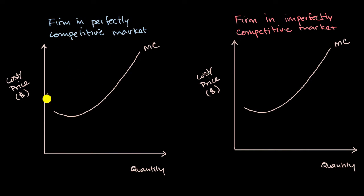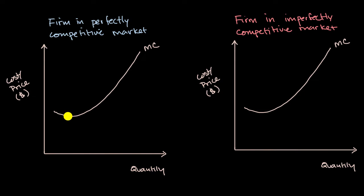We're analyzing the firm's economics. This shows the marginal cost as a function of quantity. Oftentimes it will trend down initially as you have better specialization and some efficiencies, and then it might start trending up as there are coordination costs or other costs that make the marginal cost go up.